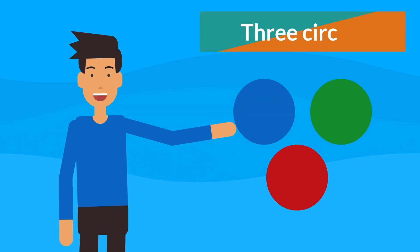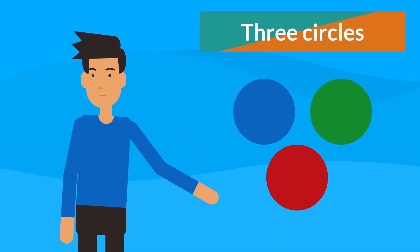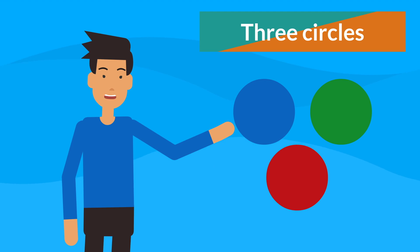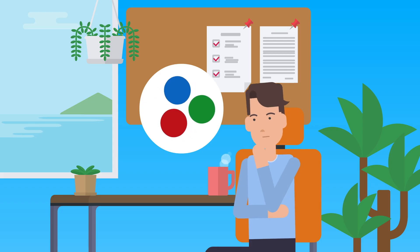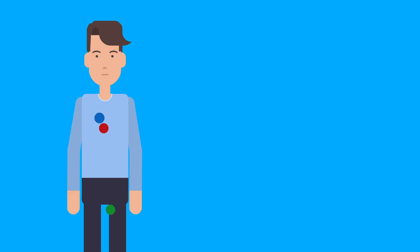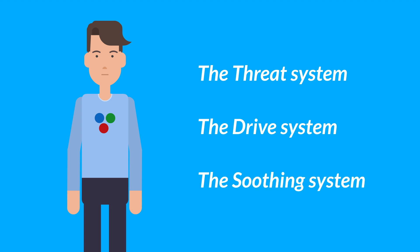It turns out we have three emotion systems which we call the three circles, and these are critical to how we experience day-to-day life. These systems are called the threat system, the drive system, and the soothing system. Let us have a closer look at each of these.